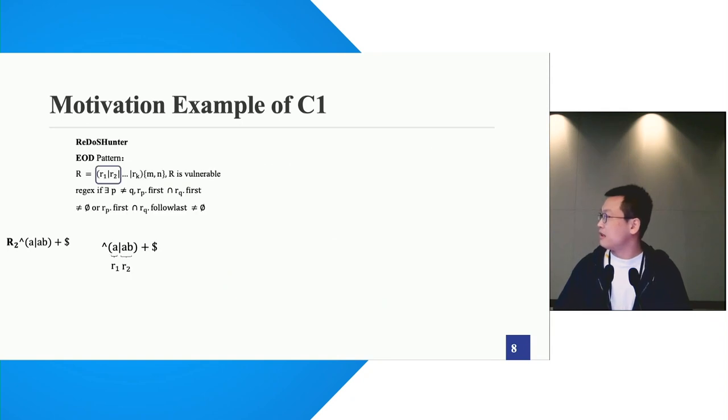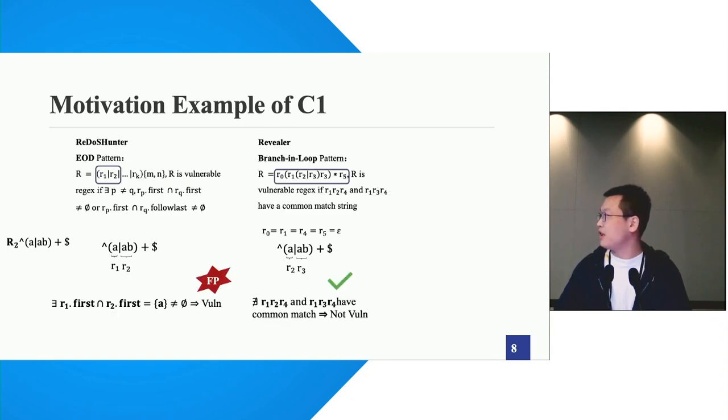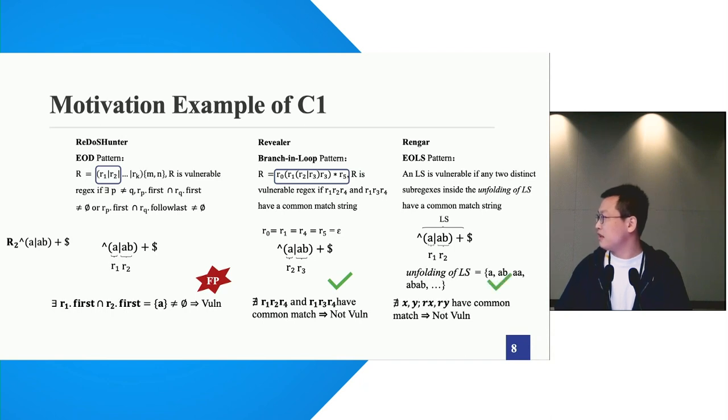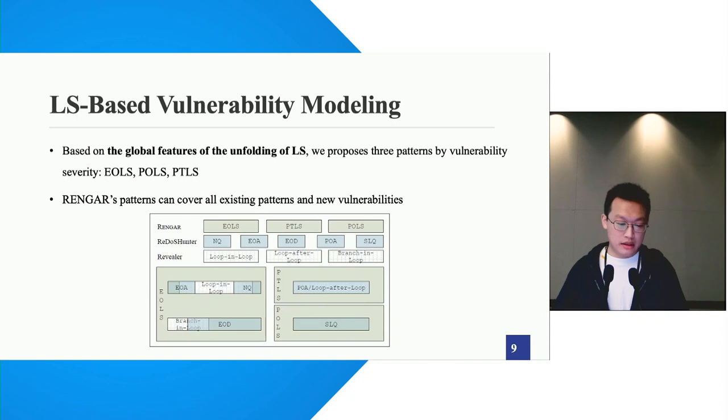This is another example for challenge 1. We put another example here just to demonstrate that existing patterns can produce both false positive results and false negative results. Based on summarizing the global features of the unfolding of the LS, we summarized in total three patterns, also considering the vulnerability severity. The figure here would like to demonstrate that our patterns are more descriptive than the union of all the existing patterns.